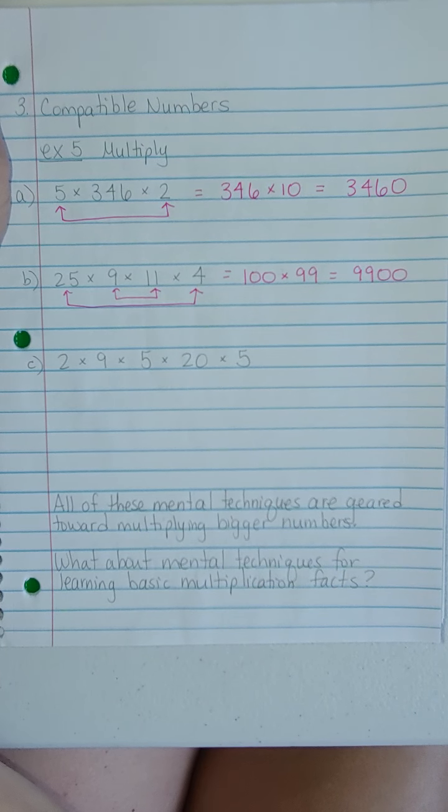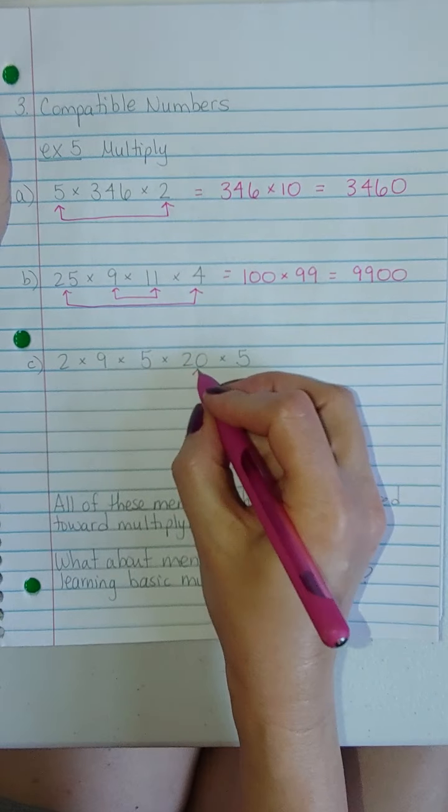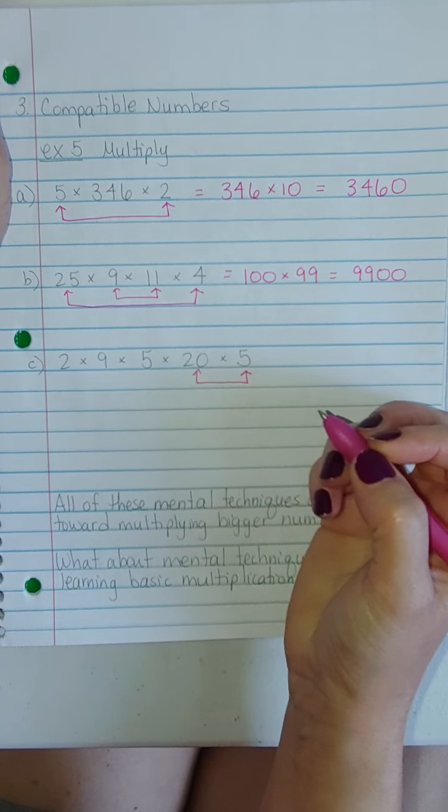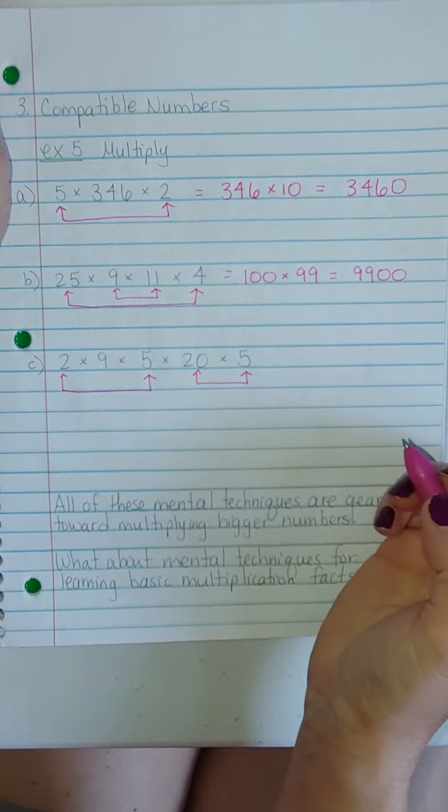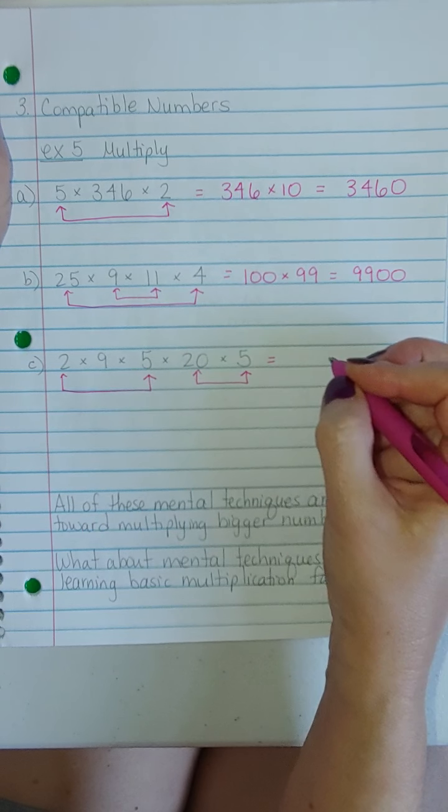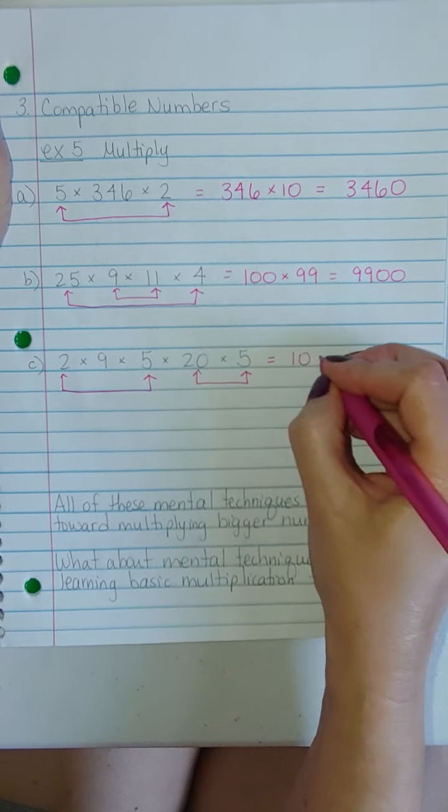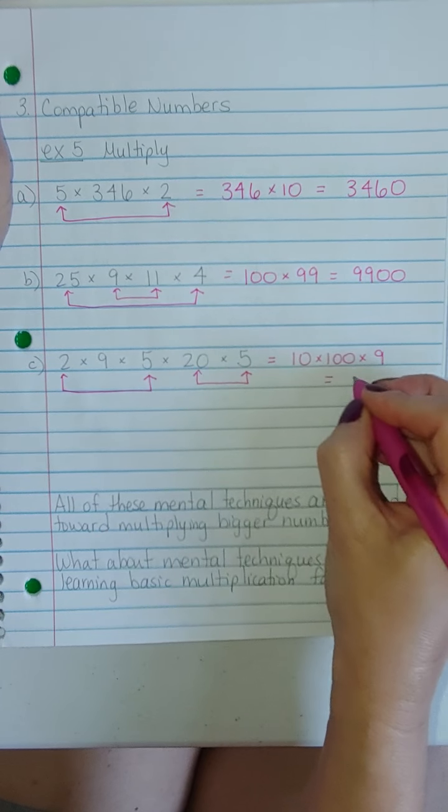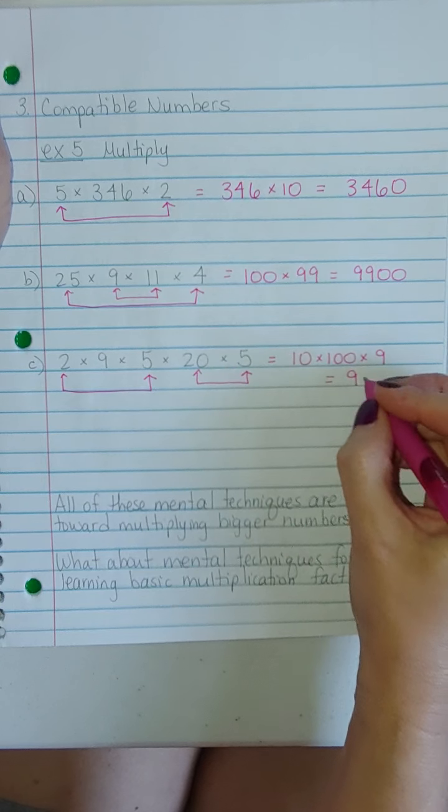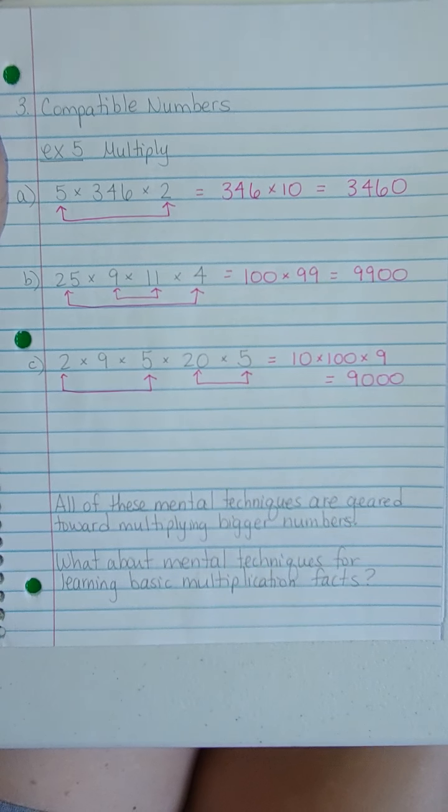All right, what about this? Well, 20 times 5 is nice, right? That one's just 100. 2 times 5 is nice. That's just 10. So I'd have 10, 100, and 9. Well, that's just a 9 with three zeros. So it's just 9,000.